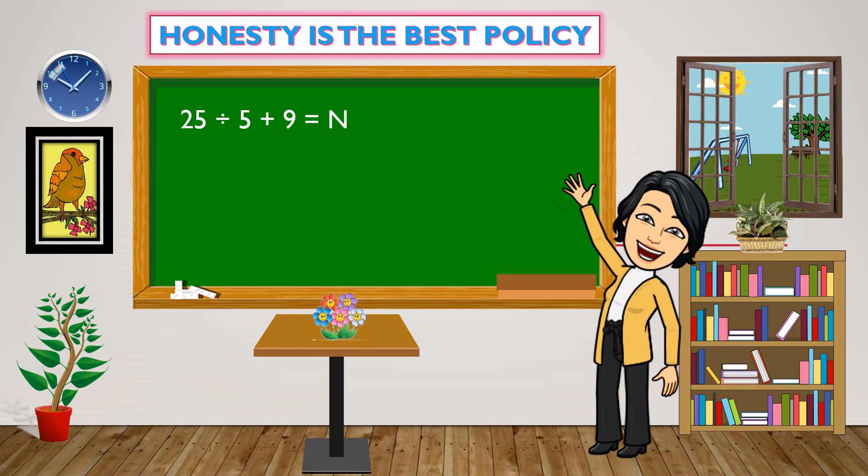25 divided by 5 plus 9 equals N. There are no parentheses, so we will start with division. From the left, division is the first operation, so we perform that first. 25 divided by 5 equals 5. Then copy plus 9. So, 5 plus 9 equals 14.